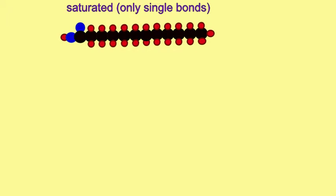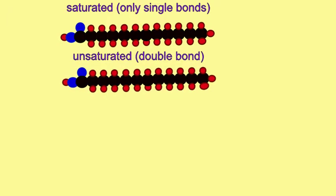Other fatty acids may possess double bonds between carbon atoms, and thus be unsaturated, because they do not have the maximum number of hydrogen atoms.